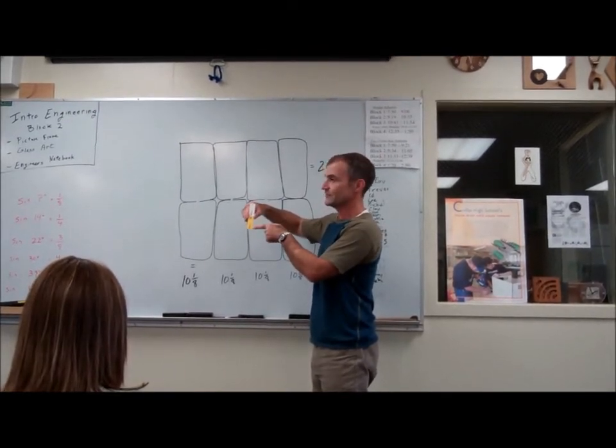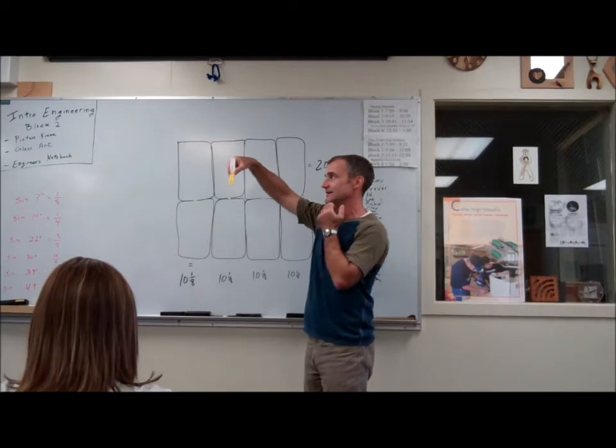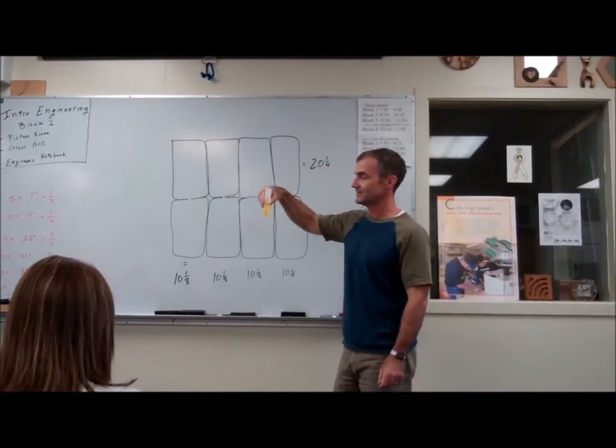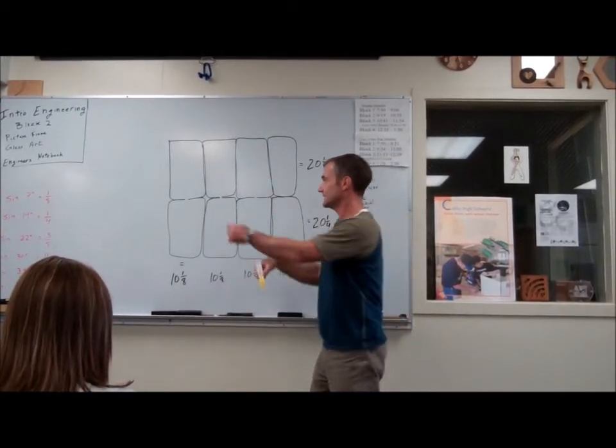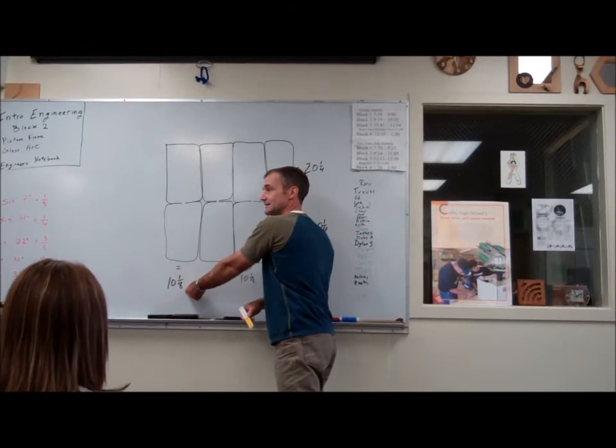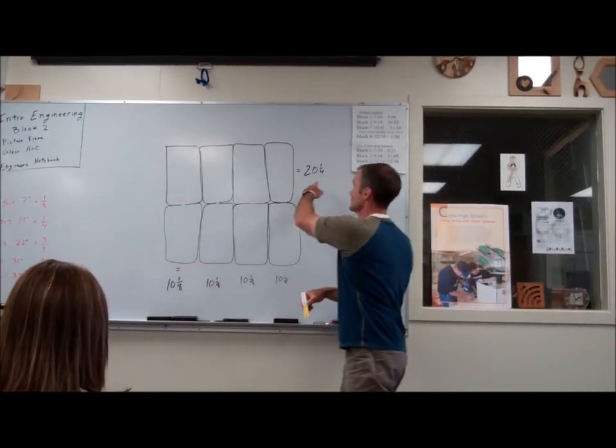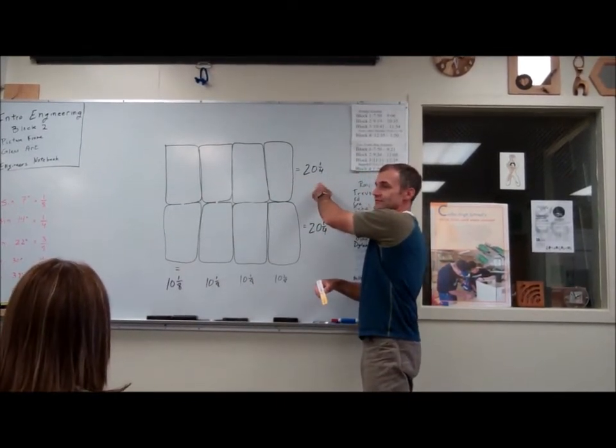One eighth and four eighths. So these two tiles right here would be five and five eighths. I need them to add up to 10 and an eighth in this direction, and 20 and a quarter in this direction.